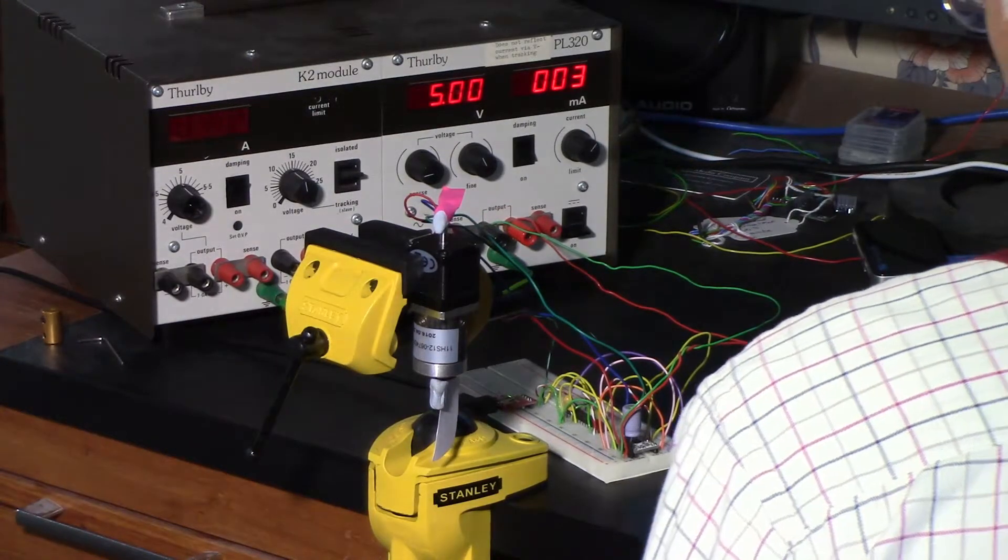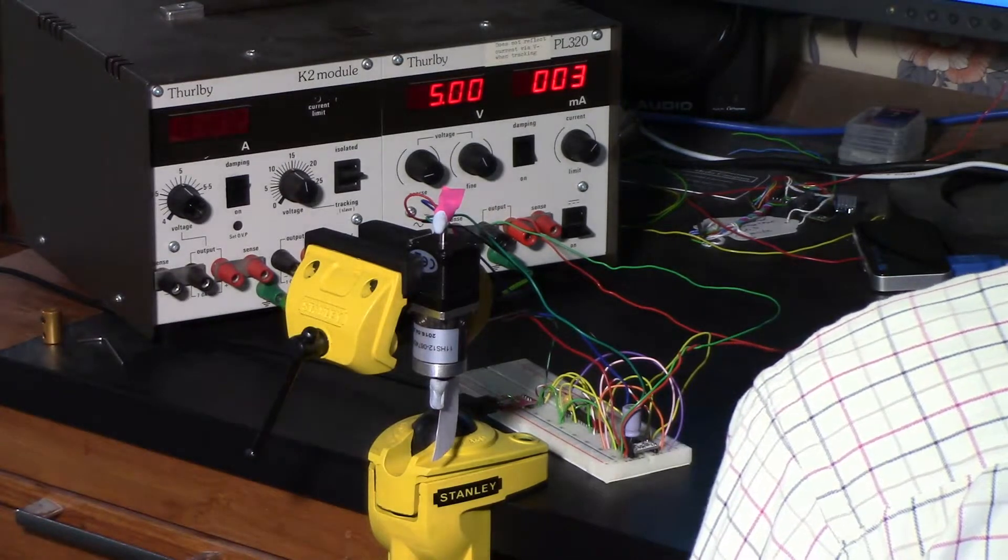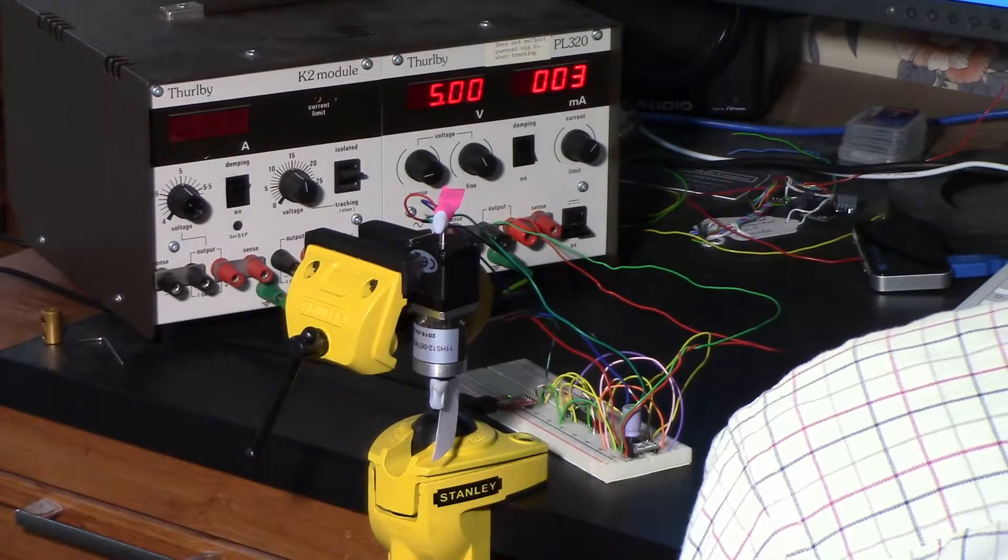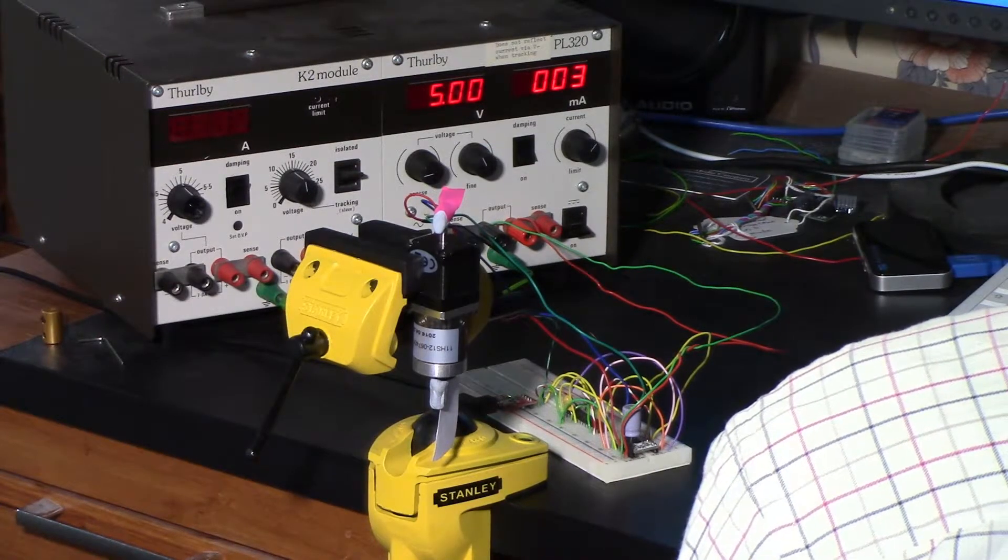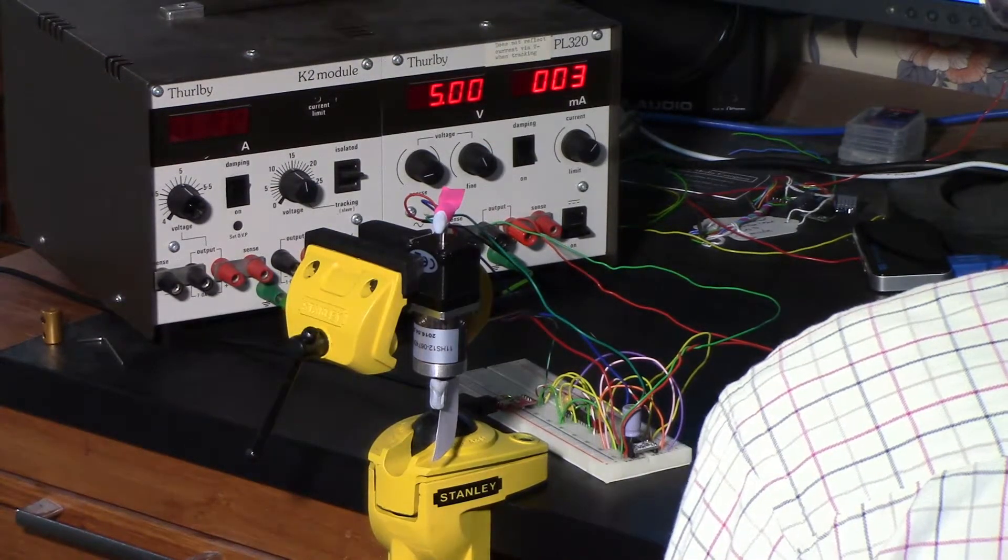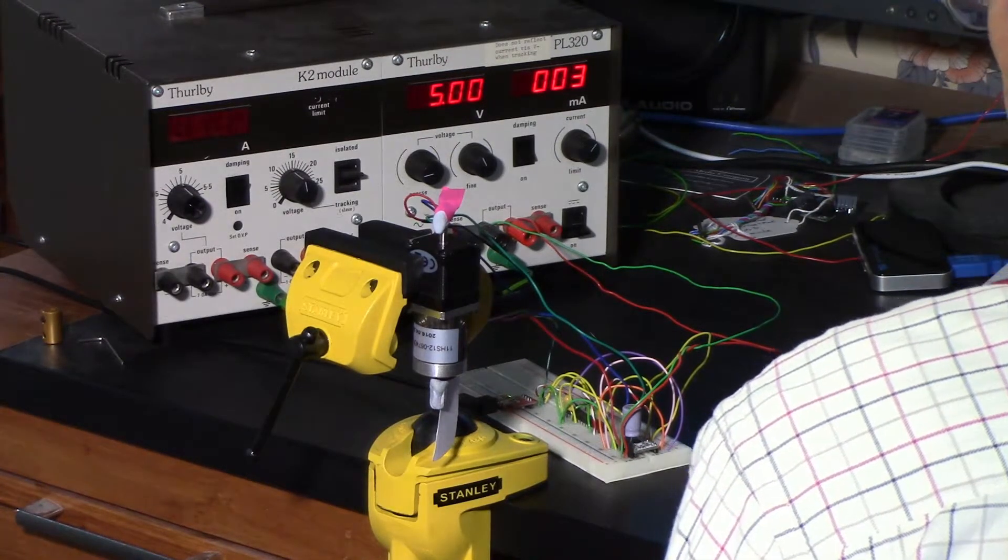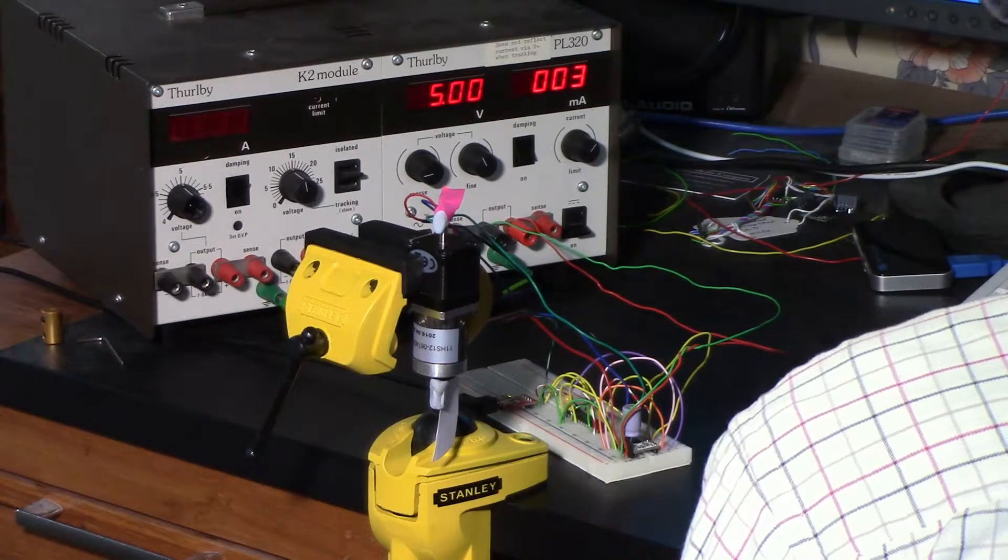The reason the current goes down as the step frequency goes up is because of the inductance in the coils. It takes time for the current to build up, so if you wanted to drive the thing at full current at a high step rate you need to use a higher voltage, which I'm not doing because I don't need to do that.